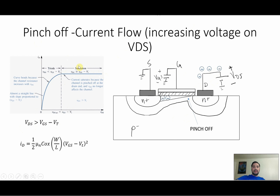How do you know you're in saturation? That's when your VDS is greater than VGS minus VT. No matter how much voltage you put in, VDS is not going to have an effect on the channel — it's just going to be a straight line. But that's only in an ideal transistor, not a real transistor. In order to find the current in saturation, you have to use this equation right here.